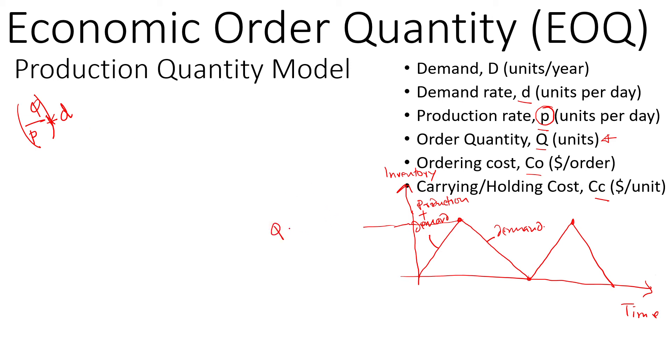The inventory during the time it takes to make Q number of units, and the inventory used during that time is Q by p times d. We can write Q times 1 minus d by p. I made a typo here; this should be p.